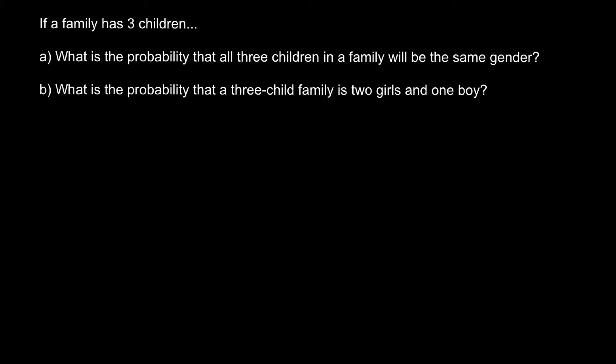Hello and welcome to Nikolai's genetics lessons. Today's video is about genetics and the application of the rule of probability. Here is a problem: if a family has three children, there are two questions. Question A: what is the probability that all three children in a family will be the same gender? And Question B: what is the probability that a three-child family has two girls and one boy?